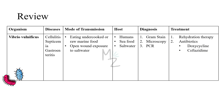Let's review everything in this short table. The organism discussed today is Vibrio vulnificus. It causes cellulitis, septicemia, and gastroenteritis. It is transmitted by eating raw or undercooked marine food and by exposure of open wounds to salt or brackish water. Its hosts are humans, seafood, and salt water. Diagnosis is based on gram staining, microscopy, and PCR. Treatment includes rehydration therapy and antibiotics — doxycycline and ceftazidime.